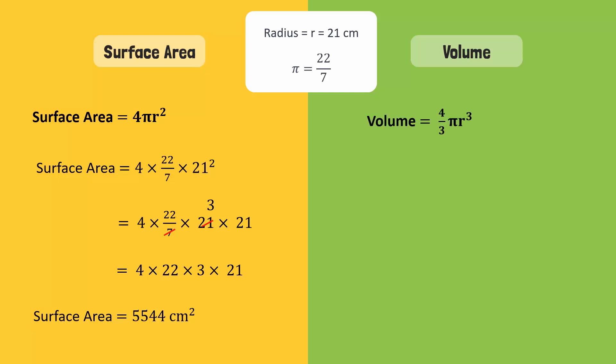Now, let's take a look at the volume. The volume of a sphere is equal to 4 divided by 3 times pi times r cubed, or simply, 4 by 3 pi r cubed.